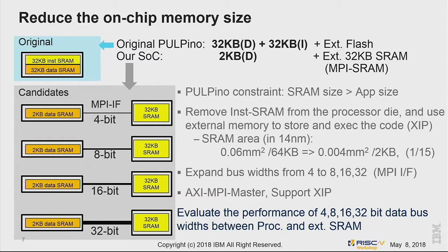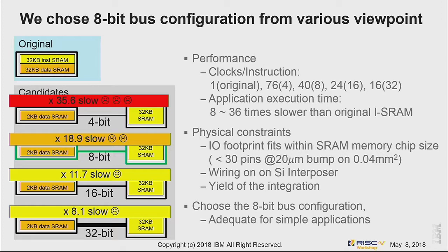By moving the instruction SRAM outside, the bandwidth between the processor and SRAM becomes a problem. Initially we used a 4-bit quad-SPI bus, but it was very slow, so we extended to 8-bit, 16-bit, and 32-bit, getting much faster as expected. However, with 20-micron bumps the SRAM only has 30 pins, so we cannot use a 32-bit bus. Considering integration yield and power consumption, we chose the 8-bit bus.